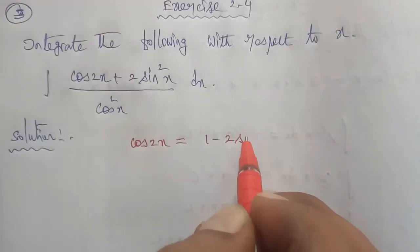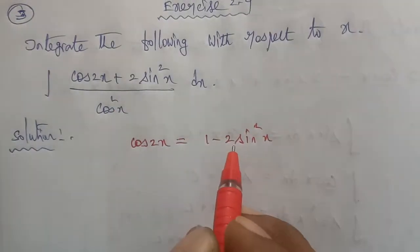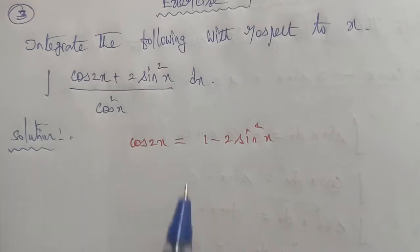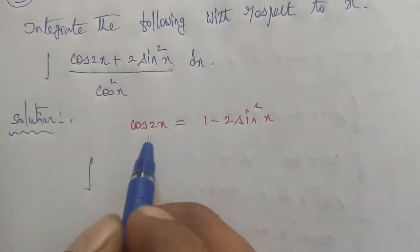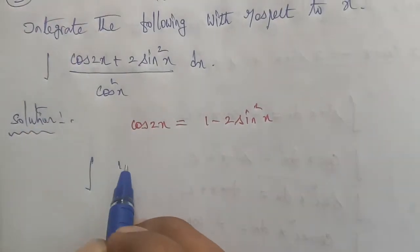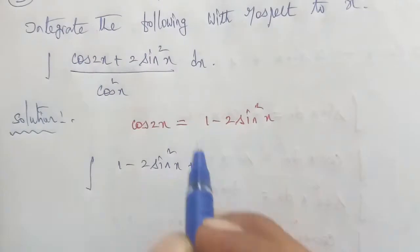1 minus 2 sine square x. So the formula entry point. This is a trigonometry formula. So the entry point: integration of cos 2x formula is 1 minus 2 sine square x.